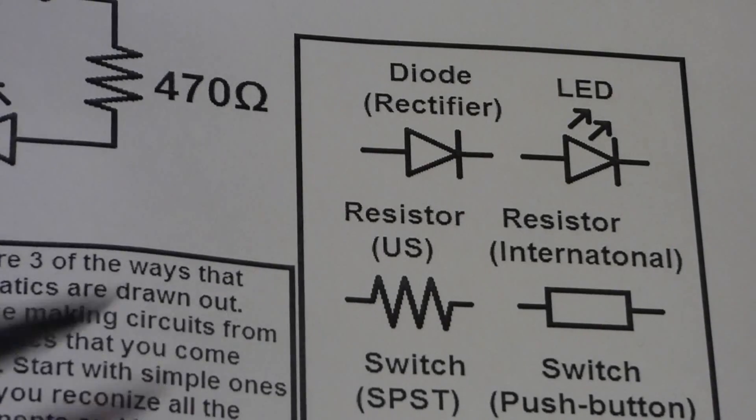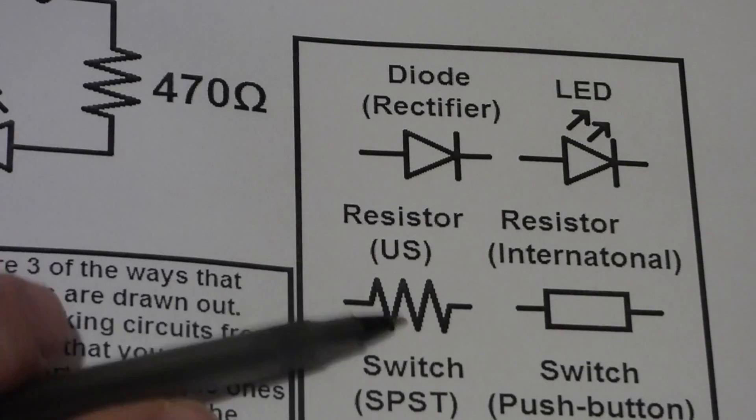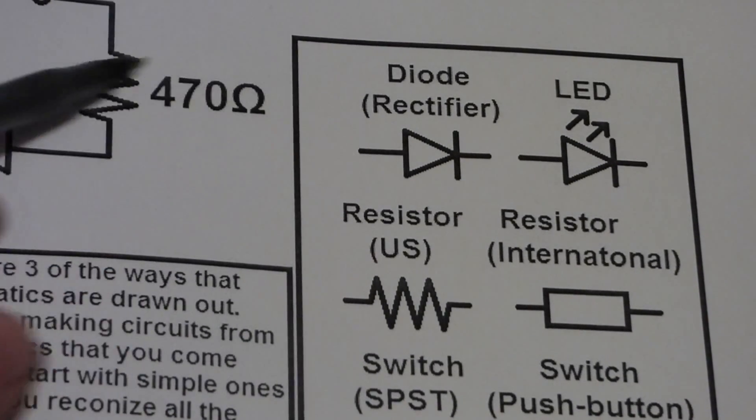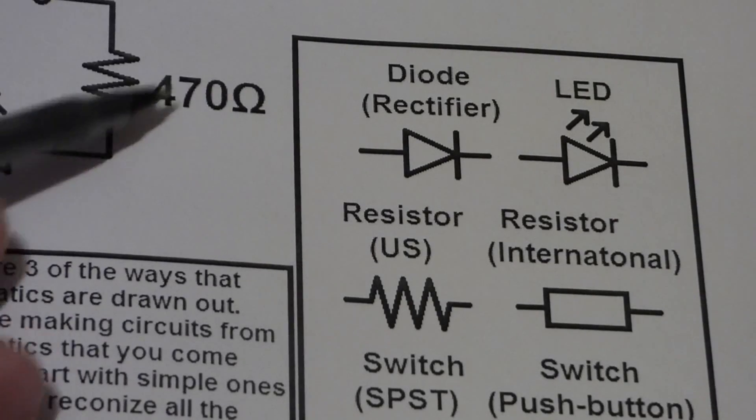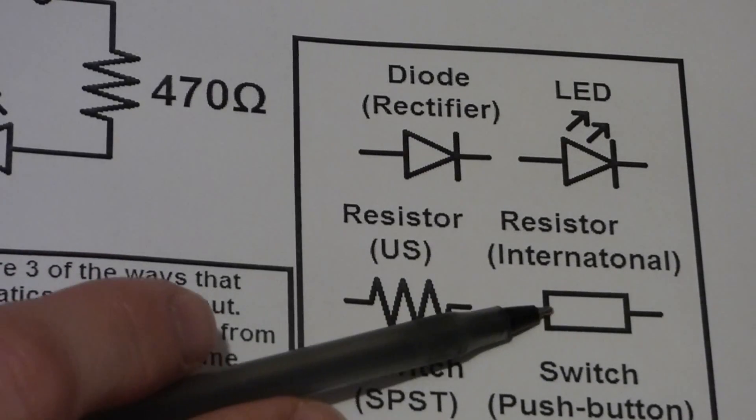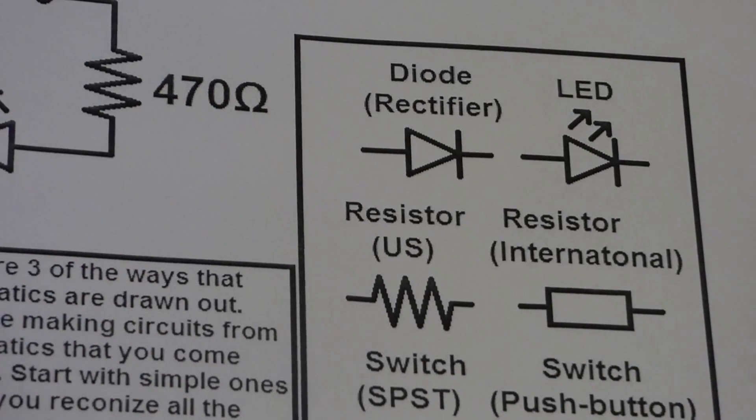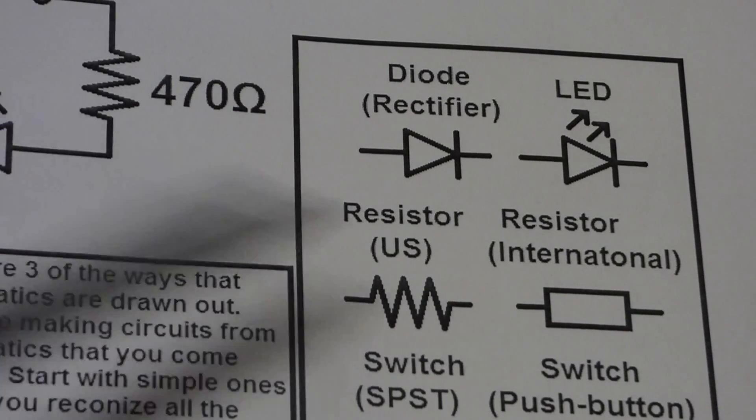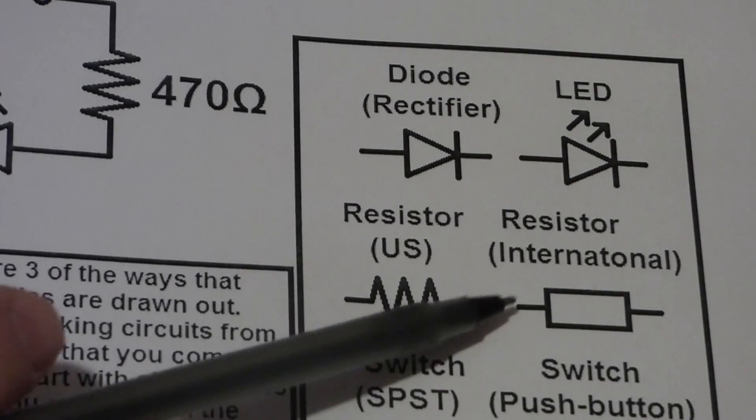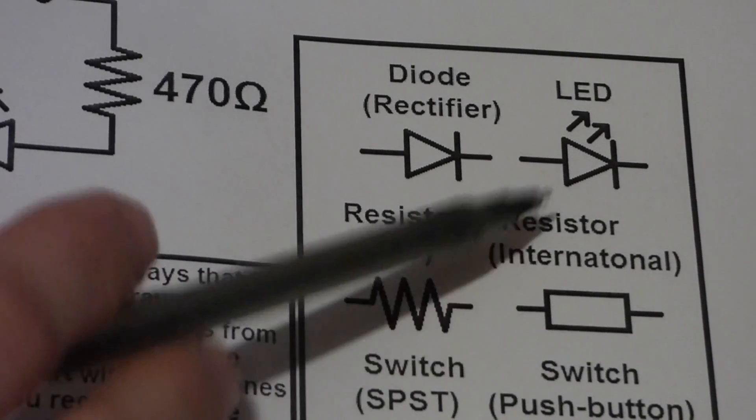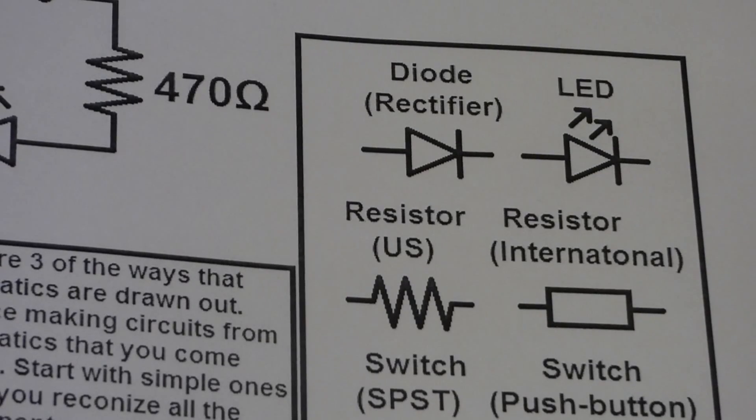Now resistors are kind of a special case. In the U.S. it's really common to use these jagged lines. And also you write the amount of resistance in ohms next to the component. But other parts of the world use this rectangle. And again they write the component value on there. But that's something to be aware of. If you're not seeing jagged lines but rectangle instead, you know that they're using this symbol for resistors instead of that symbol.